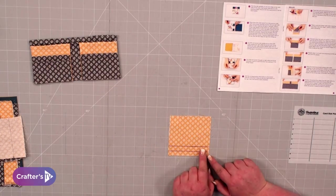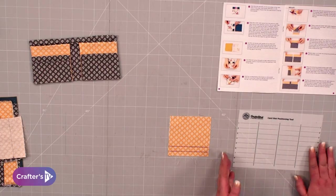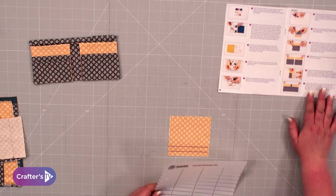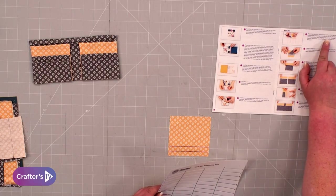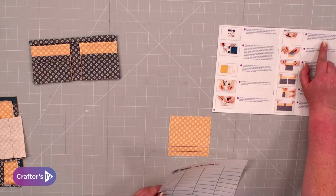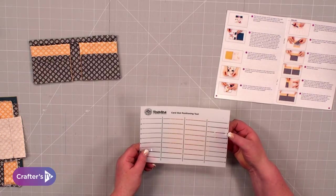The first thing you're going to do is take one of your pieces. I've got my lines drawn on here. I'm going to show you how I position this. It tells you to align the third line of the tool with the bottom long edge of the panel.